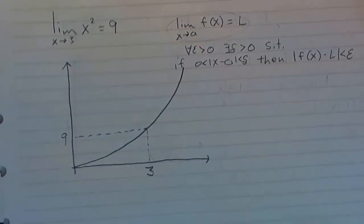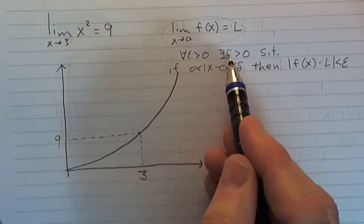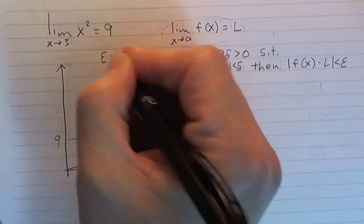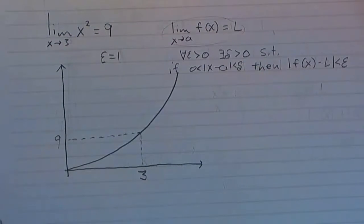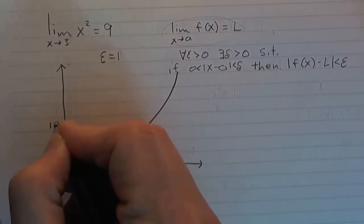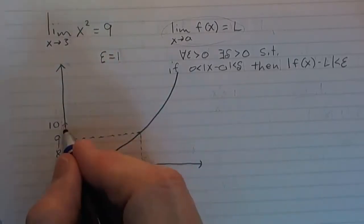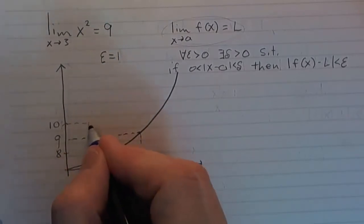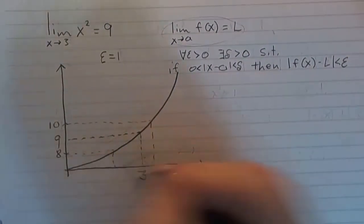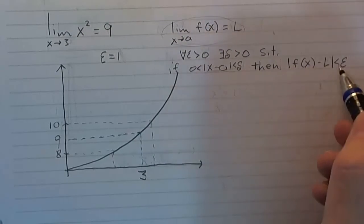Here's how we will give evidence to support it. Remember, the definition says: for all epsilon greater than 0, you can find a delta greater than 0. So let's test that out. Let's suppose that epsilon is equal to 1. If epsilon is equal to 1, let's find a delta. If epsilon is equal to 1, that means we go up 1 from the 9 and down 1 — so this is an epsilon neighborhood.